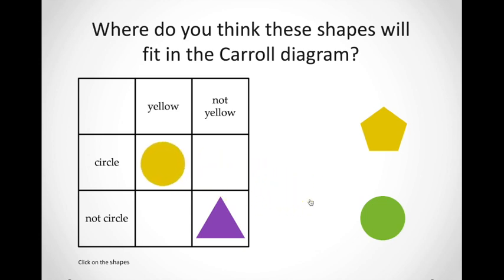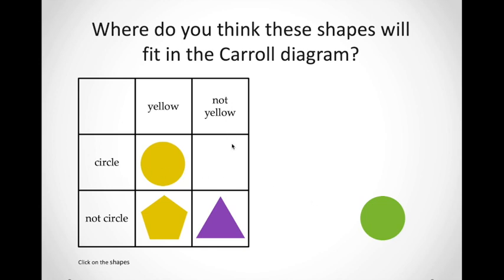Let's look at the next shape. Is it a circle? No, it is not. But is it yellow? Yes, it is. So we're going to put it in the block that says yellow but not a circle. Just like that, well done. Now let's look at the next shape. Is it a circle? Yes. But is it the color yellow? No. So we're going to put it in the circle block that says not yellow. Just like that.